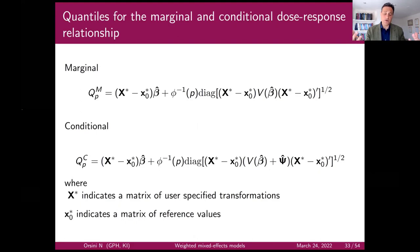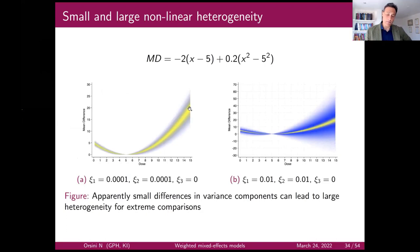The marginal and conditional quantiles extend when you have more than one regression coefficient. You have a variance-covariance matrix for the fixed effects, and a variance-covariance matrix for the estimated random effects.